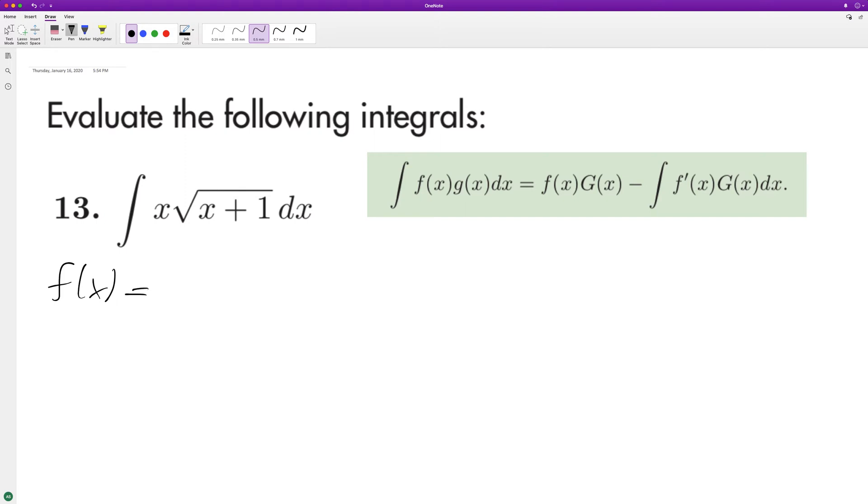We'll assign that equal to just x, and then g of x will be... we can rewrite the square root of x plus 1 as (x+1) raised to the 1/2. All right, so then...